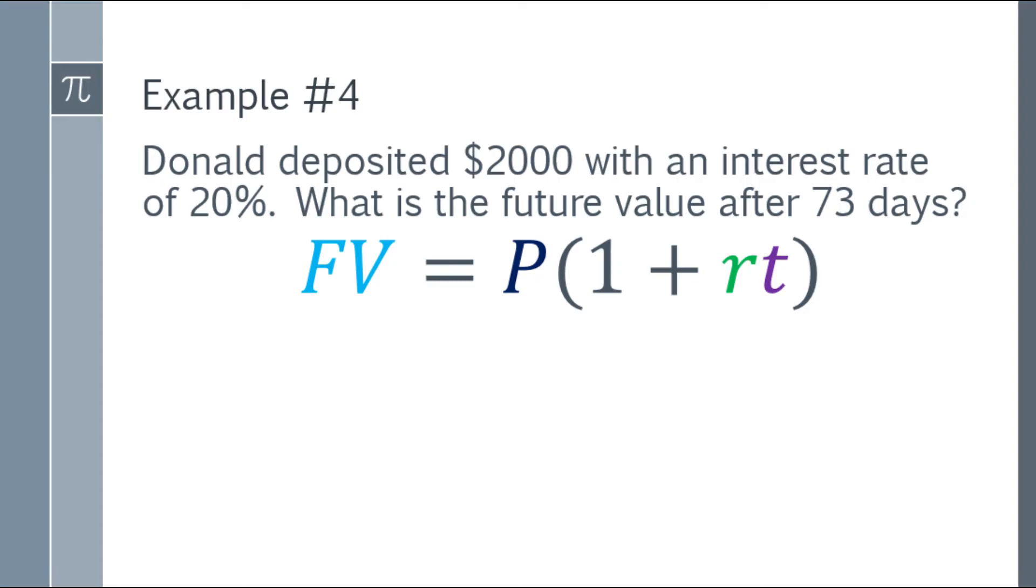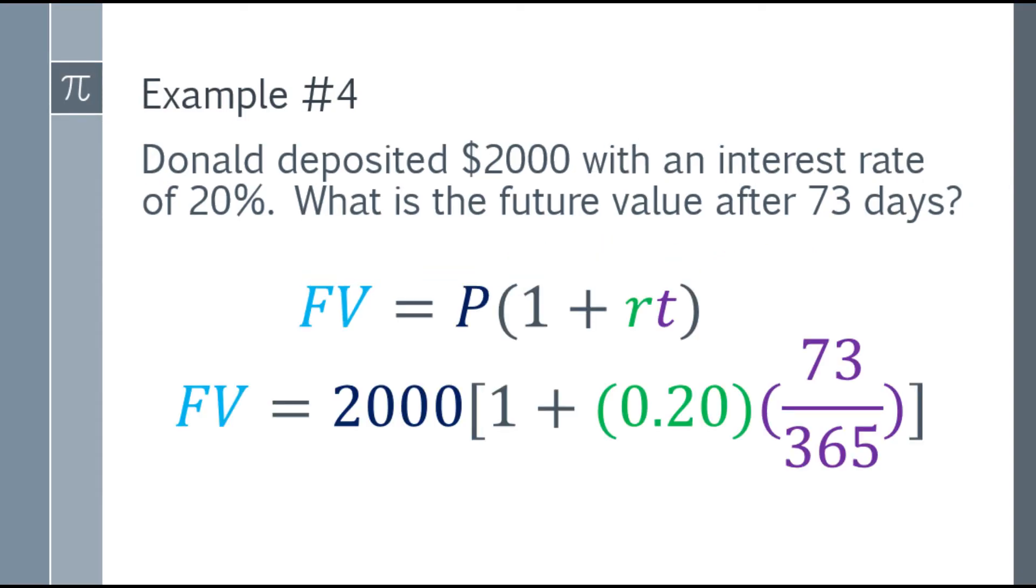Next, we have to substitute it. So future value is equal to 2,000 times the quantity 1 plus the multiplication of RT. So rate is 20%, that will be 0.20 or 0.2. And we're in days, so 73 over 365, since there are 365 days in 1 year.